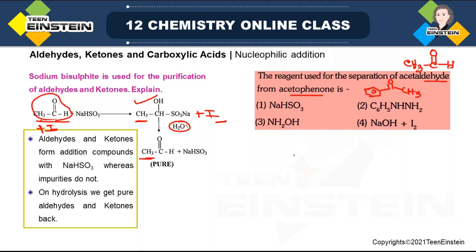The reagent options include NaHSO₃, phenylhydrazine (Ph-NH-NH₂), hydroxylamine (NH₂OH), and NaOH plus iodine. NaOH plus iodine is the reagent used for haloform reaction, which is positive when there is a COCH₃ group present. This COCH₃ group is present in both compounds, so this reagent will not be able to distinguish them. Phenylhydrazine Ph-NH-NH₂ is a type of ammonia derivative — if you replace one hydrogen of NH₃ with Ph-NH, you get Ph-NH-NH₂.